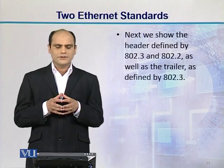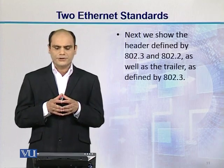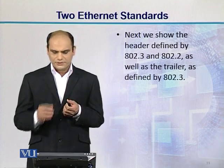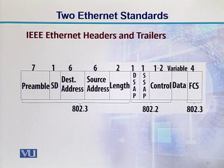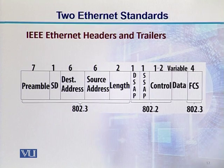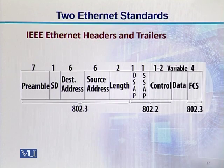Next, we show the header defined by 802.3 and 802.2 as well as the trailer defined by 802.3. In this diagram, the IEEE Ethernet headers and trailers are shown. The preamble, which is the first field, has a size of 7 bytes. Then the next field is the source address, which is also 6 bytes. Then there is a length field whose size is 2 bytes.